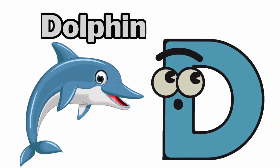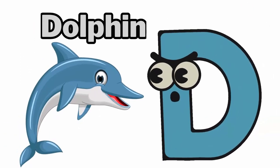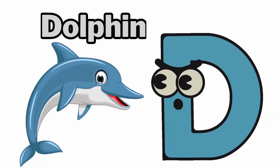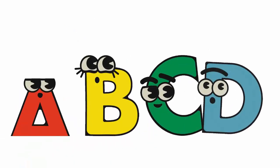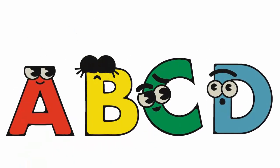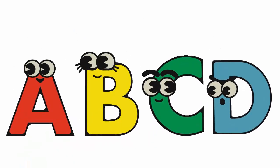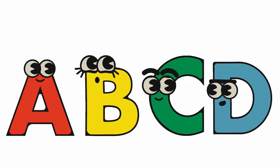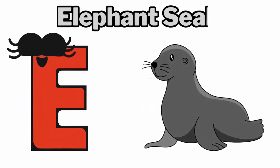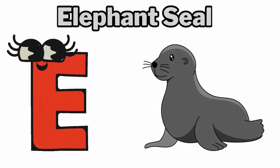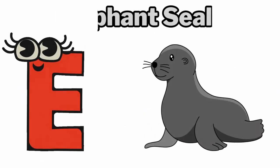D is for dolphin, juh, dolphin. E is for elephant seal, ah, elephant seal.